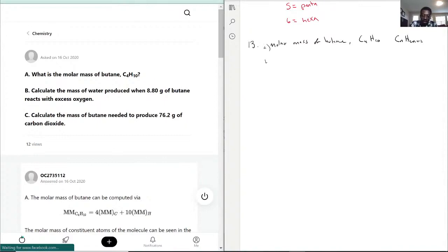So that's part A. Part B: calculate mass of water produced when 8.80 grams of butane reacts with excess O2, that's oxygen.